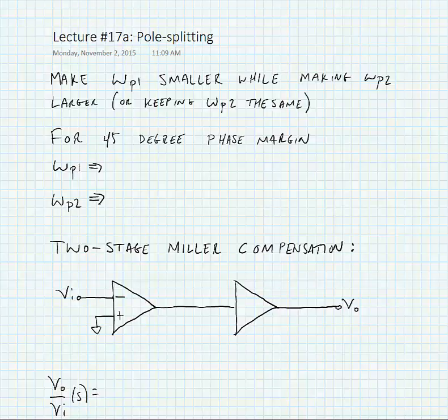We're going to look at pole-splitting compensation today. The goal of pole-splitting compensation is that we're going to make the dominant pole omega_p1 much smaller while hopefully keeping the higher frequency pole omega_p2 at a larger frequency or at least keeping it the same.